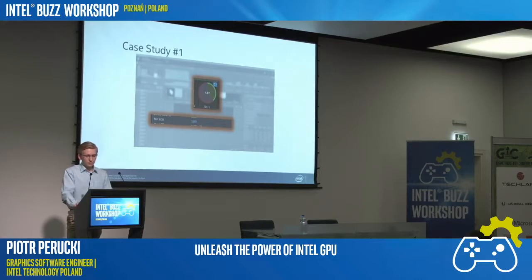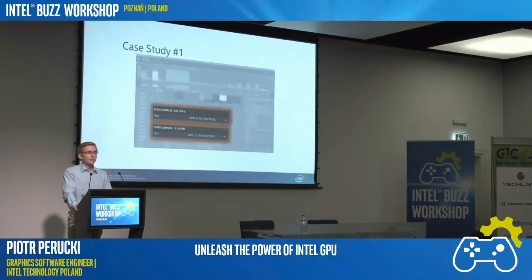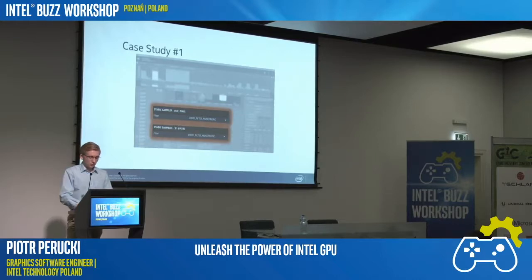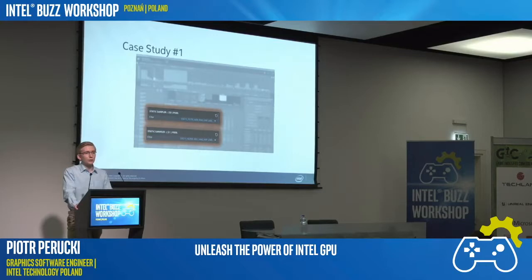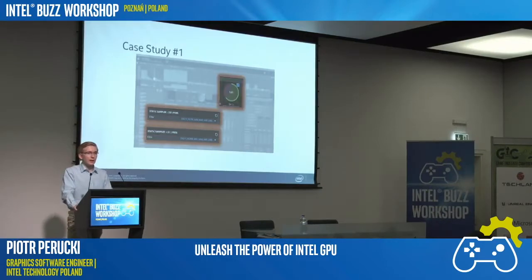But actually, this is not all. If we look at the state, anisotropic filtering is being used. It provides great visual quality, but it really hurts performance. What we can do is simply change the state to use linear filtering of the texture. After that, the frame is recalculated and we can immediately see the performance improvement. In this case, the time lowered even to one millisecond, and the stall defined by the pink color dropped to about 30%, down from 75% at the beginning.